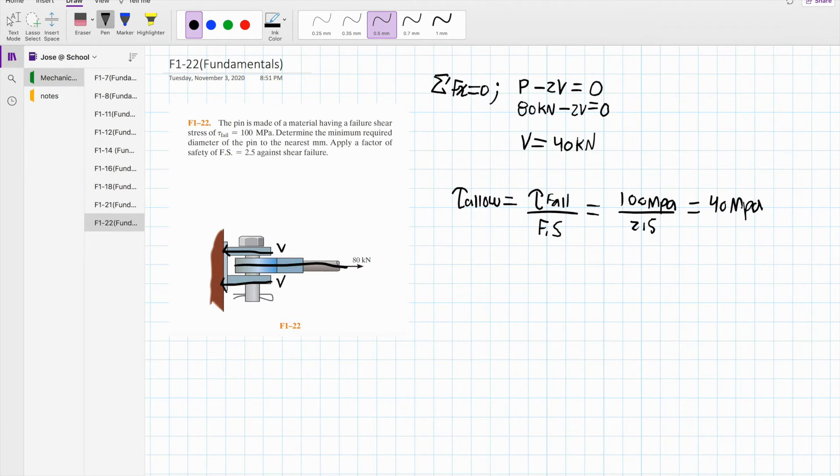Now from this equation we calculate the allowable shear stress which is given by shear force V divided by the area. In the previous step we calculated the shear allow which is 40 MPa. We can directly substitute 40 MPa into this equation. We have V equals 40 kN and the area is simply pi over 4 times the diameter squared. Let me rewrite this for clarity.